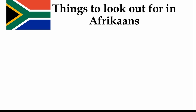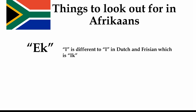Now, finally, we're going to have a look at Afrikaans. In Afrikaans, 'ek' means 'I', and it's different to both Dutch and Frisian, which both use a word more like the German 'ich'. So if you see 'ek', which obviously is going to be used a lot because a lot of the time when you're talking you're talking about 'I', then you know it's Afrikaans because this is the only language with 'ek' meaning 'I'.